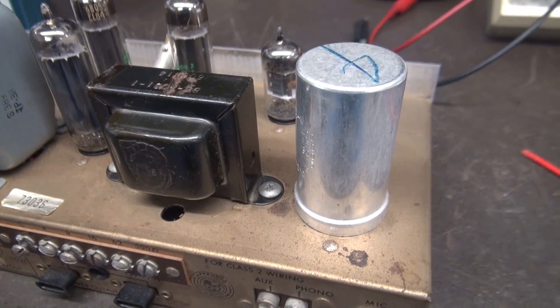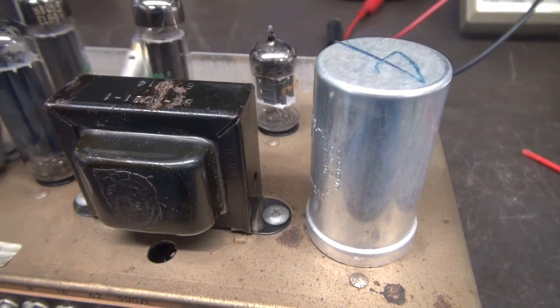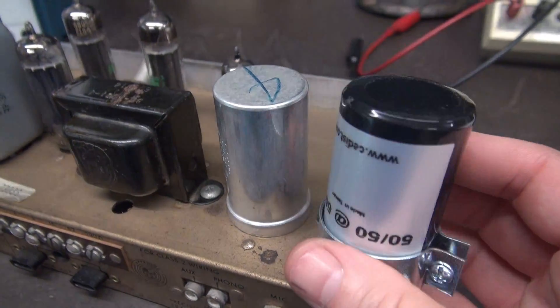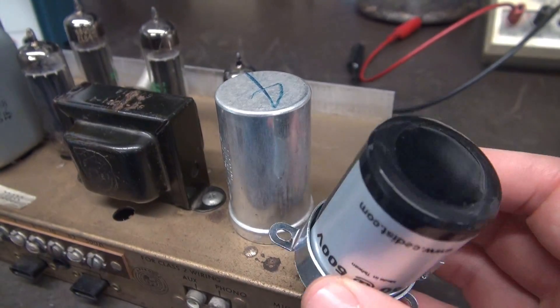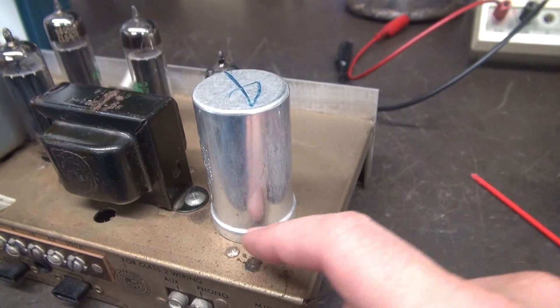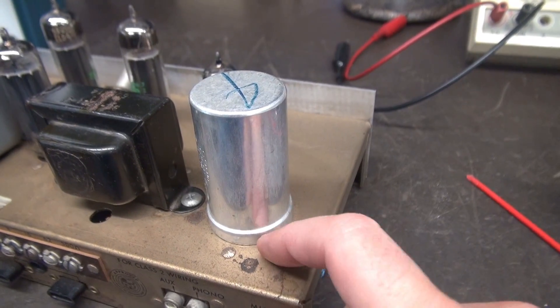Here's the old original filter capacitor. Served his time well. He's coming out, and I'm replacing it with the CE distribution type. So there are mounting little flanges on mine, so I'm going to have to drill two little holes to mount it.